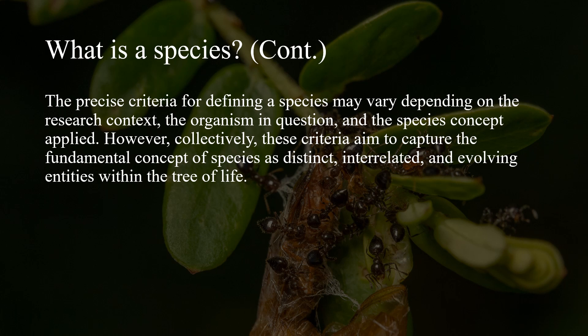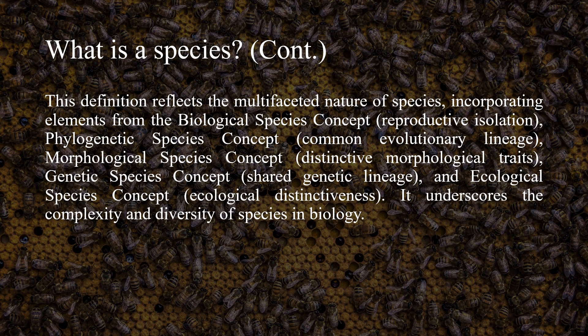Collectively, these criteria aim to capture the fundamental concept of a species as distinct, interrelated, and evolving entities within the tree of life. This definition reflects the multifaceted nature of species, incorporating elements from the biological species concept, which relies on reproductive isolation; the phylogenetic species concept, with a focus on common evolutionary lineage; the morphological species concept, which relies on distinctive morphological traits; and the genetic species concept, whose backbone is shared genetic lineage.